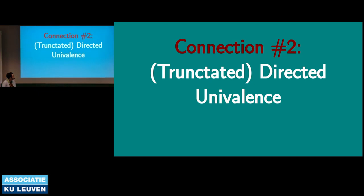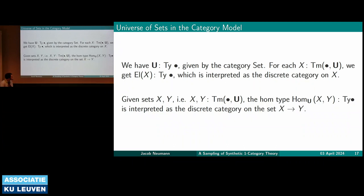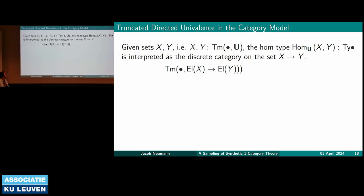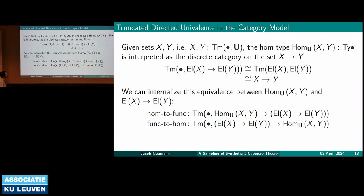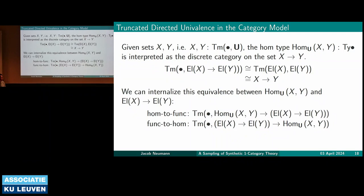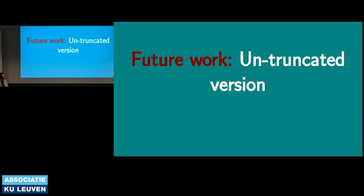We also have a directed univalence principle. We can get a universe of sets whose terms are codes of types. If we compute out what the HOMs of this universe should be, it turns out to be a type of functions — interpreted as X → Y. Terms of X → Y are also interpreted as X → Y. So we get a nice equivalence between HOMs and functors: a directed univalence. Future work includes an untruncated version that works for arbitrary higher categories.